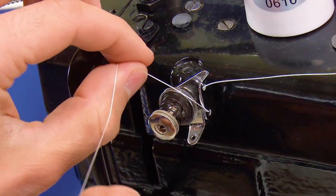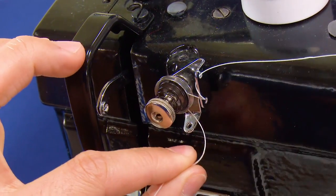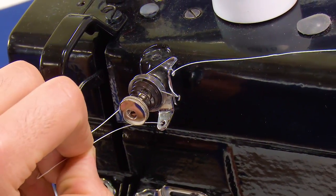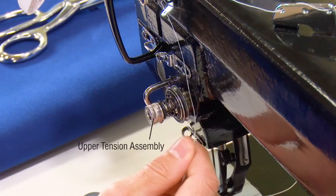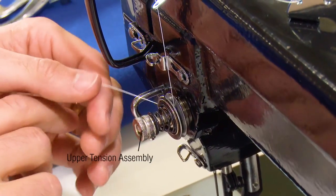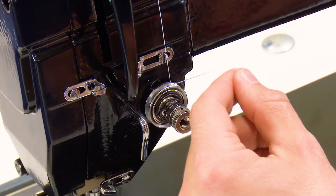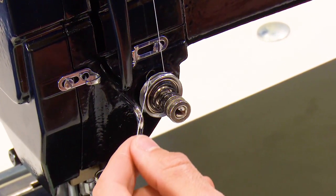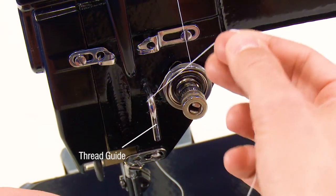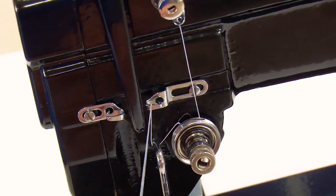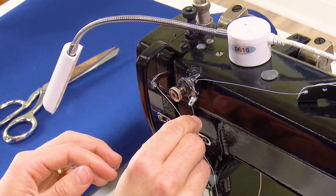Pull the thread over the top of and between the tension discs, then down through the bottom hole of the guide. This is a pre-tensioner device. Pass the thread around and between the tension discs of the upper tension device. Be sure the thread goes all the way to the core of the post. Pass the thread up through the take-up spring and then under the thread guide.